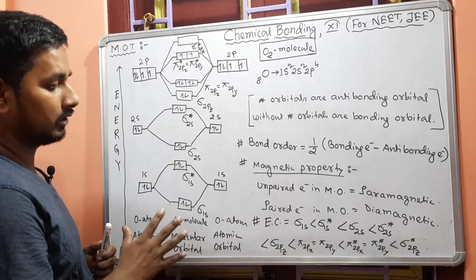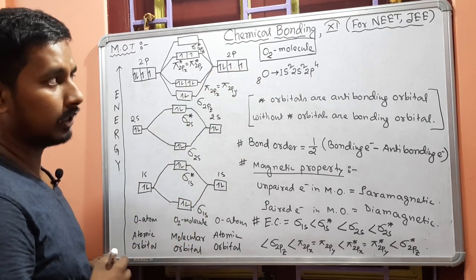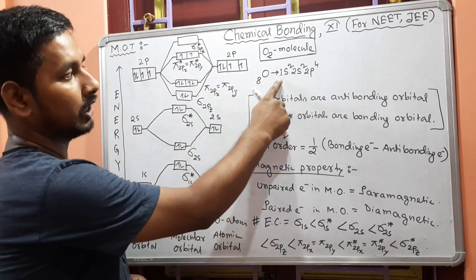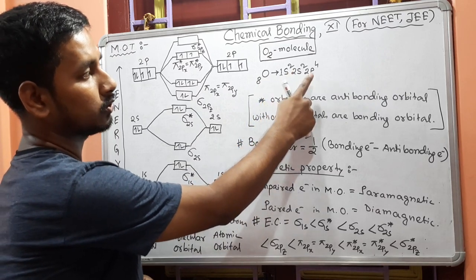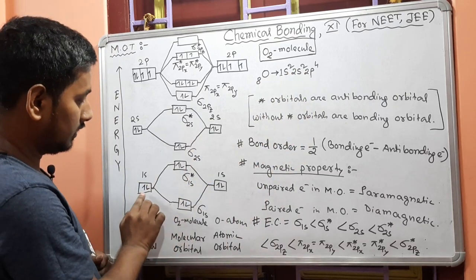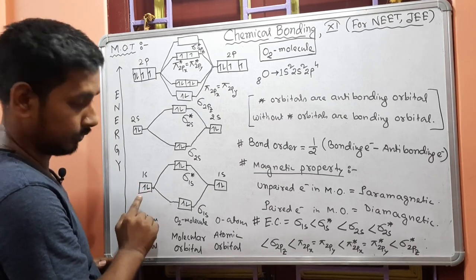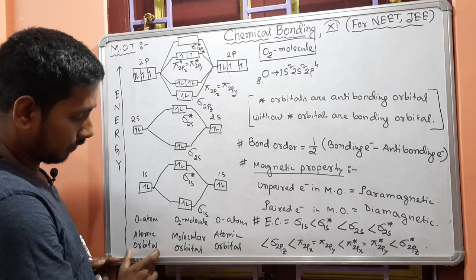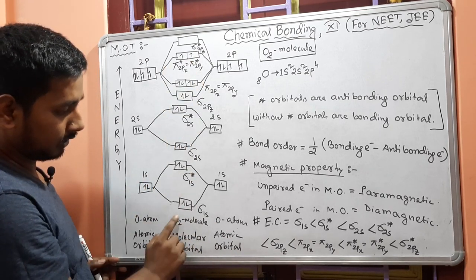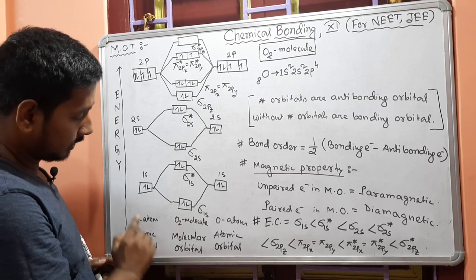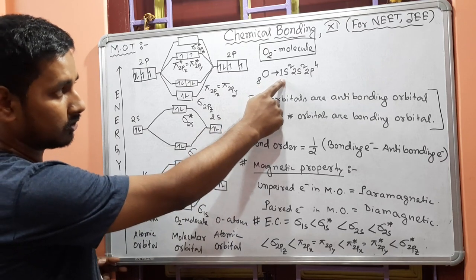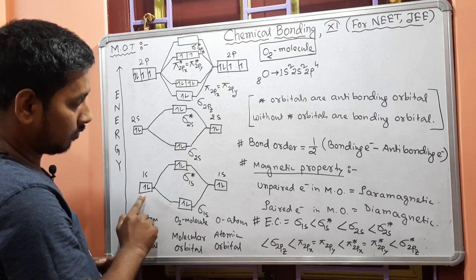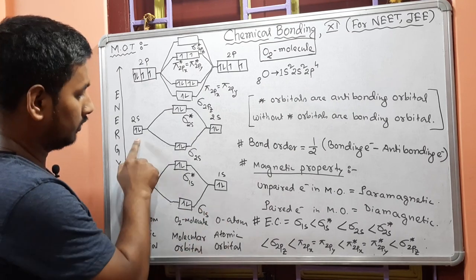To understand Molecular Orbital Theory, we take the oxygen molecule. In the oxygen molecule we have two oxygen atoms. For one oxygen atom, the electronic configuration is 1s², 2s², 2p⁴. These are the atomic orbitals for the oxygen atom. In 1s you have two electrons, in 2s you have two electrons, and in 2p you have four electrons.